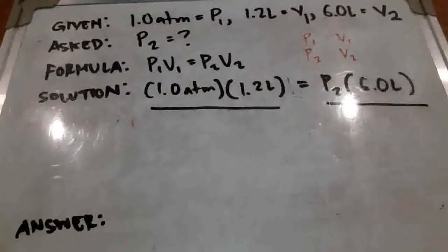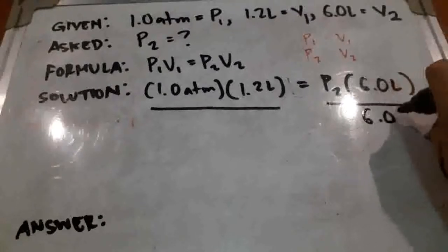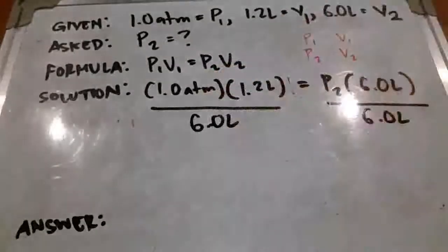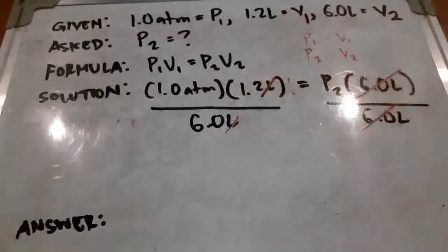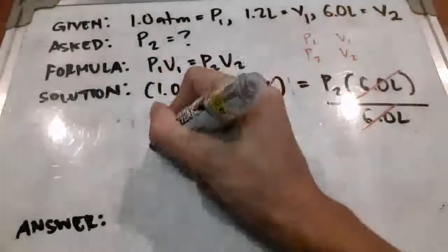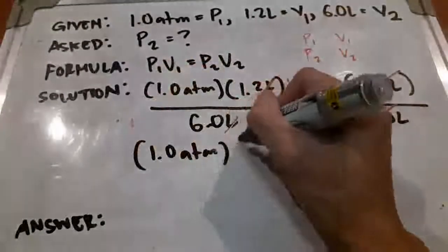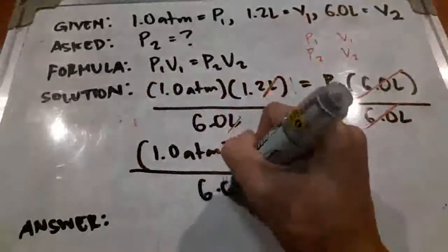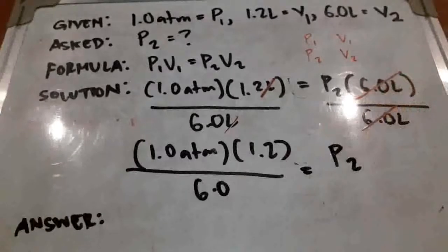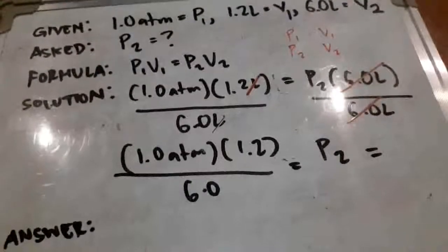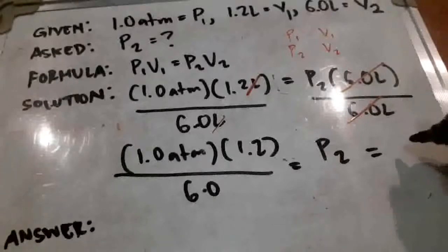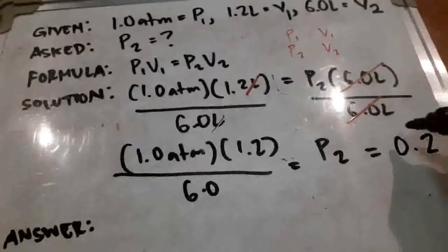We don't want anything next to P2. We want it to be alone, isolated. So we divide both sides by 6.0 liters. And by dividing both sides by 6.0 liters, we cancel out our 6.0 liters on this side. And on the other side, we cancel out the unit for liters. Alright? So what we're left with is 1 atm multiplied to 1.2 divided by 6.0. That will be equal to P2. Alright? Now, if you perform the mathematics here, so 1 times 1.2 is just 1.2. If you divide it by 6, you should get 0.2.